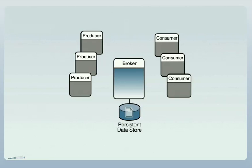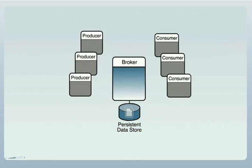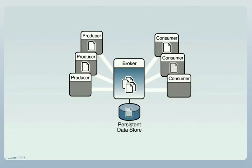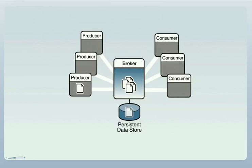However, undelivered and unconsumed messages, as well as data regarding the state of message delivery, have been stored in the broker's persistent data store. When a broker restarts, it retrieves the messages and the state information from the data store. Consumers and producers reconnect to the broker, and messaging operations resume. These are the basic mechanisms by which Message Queue guarantees that a produced message is consumed by its intended consumers once and only once.